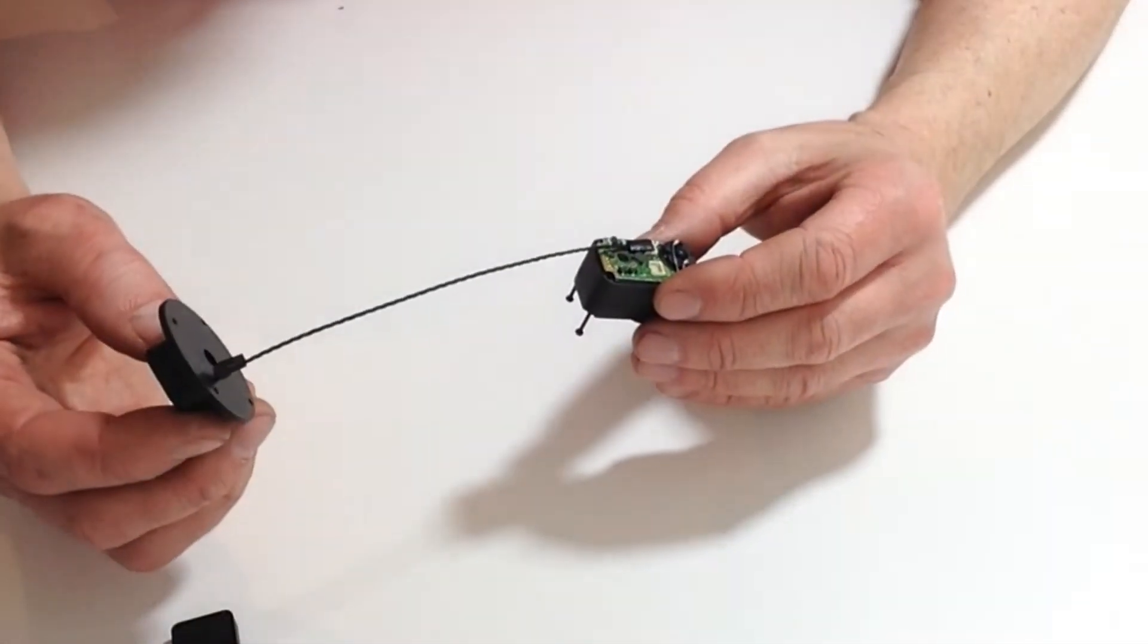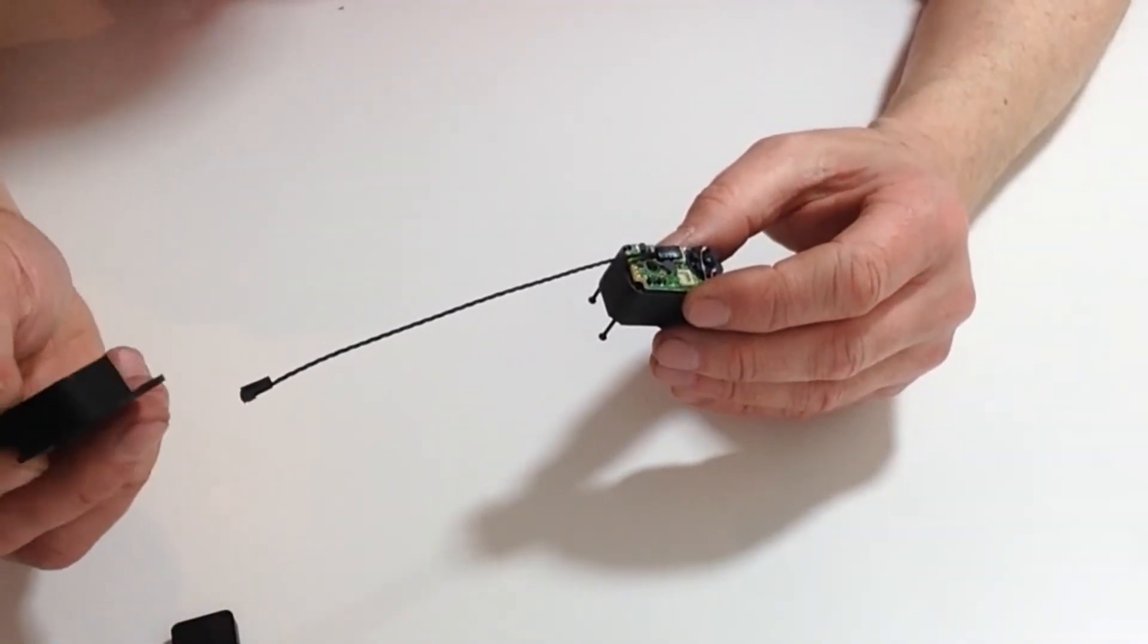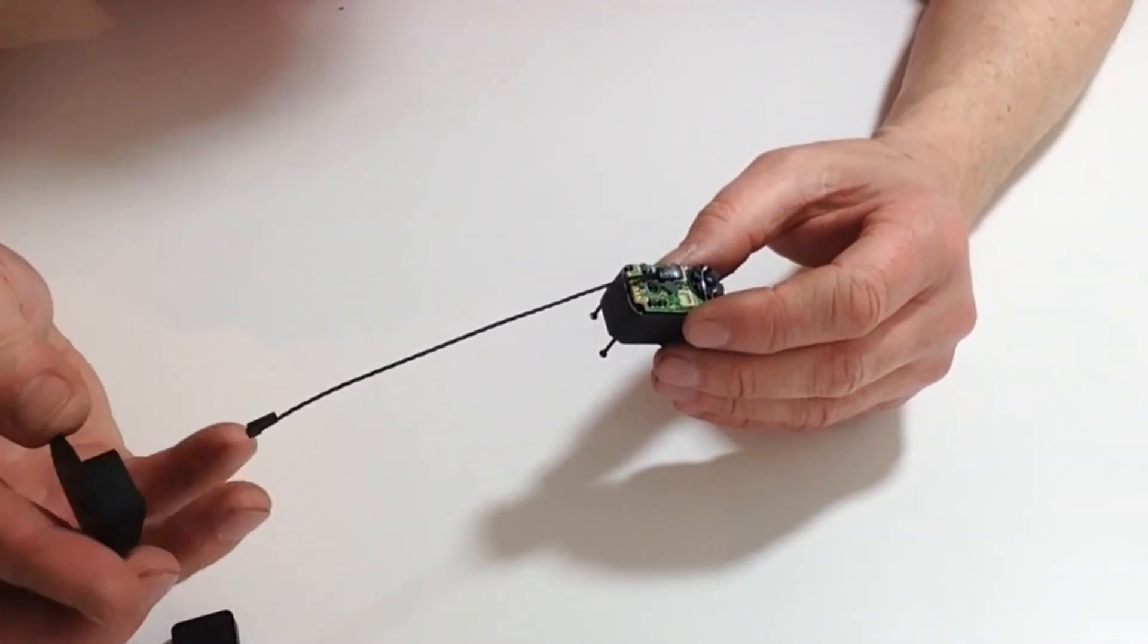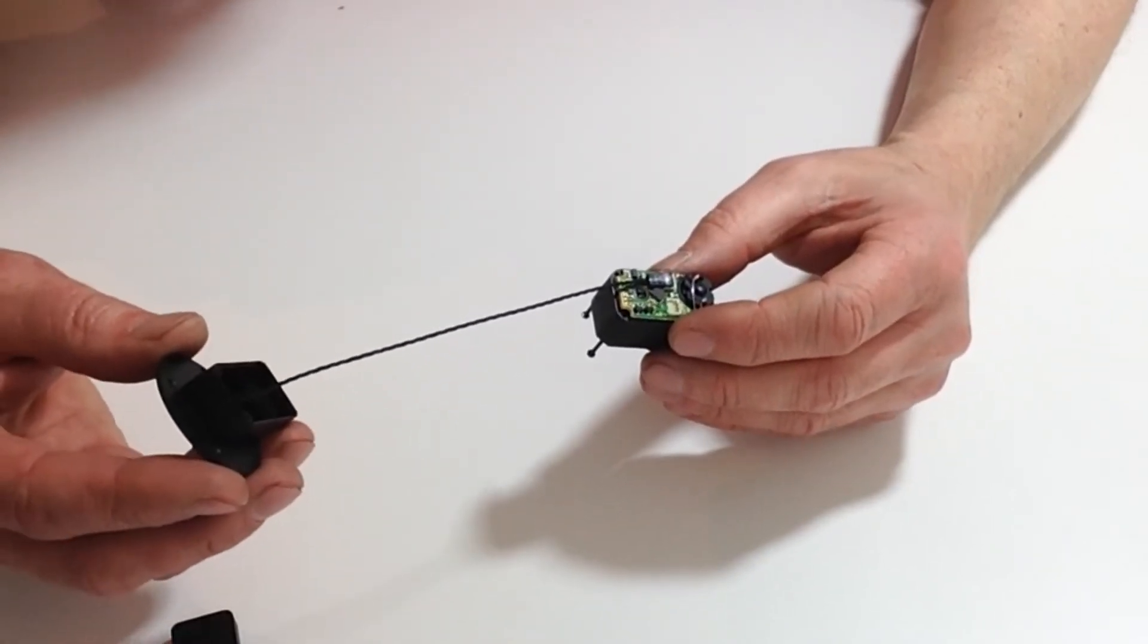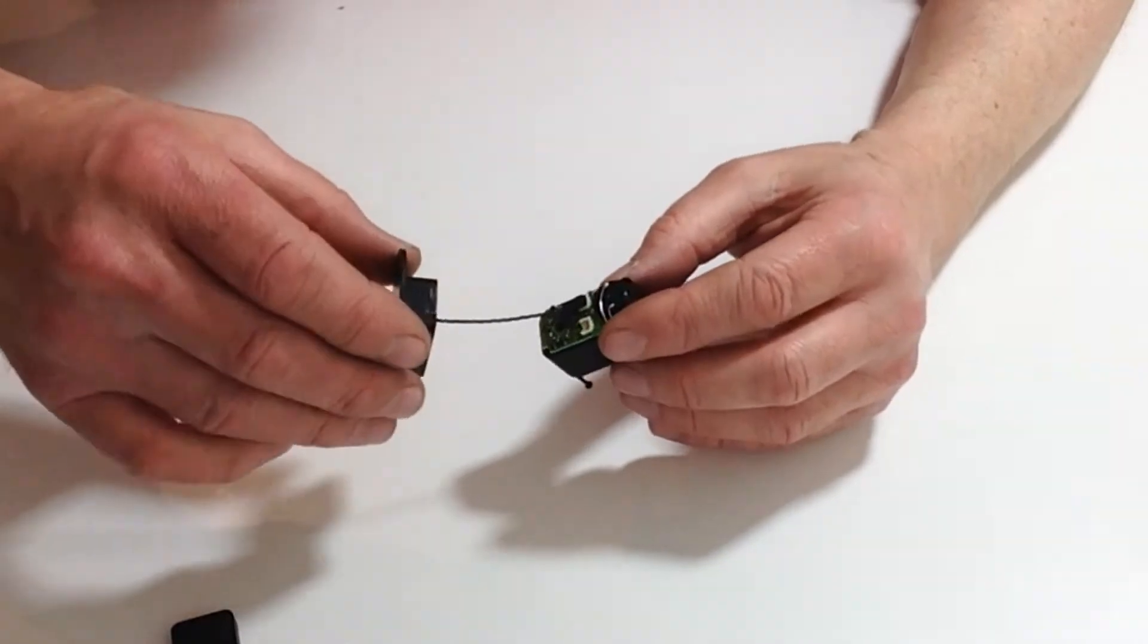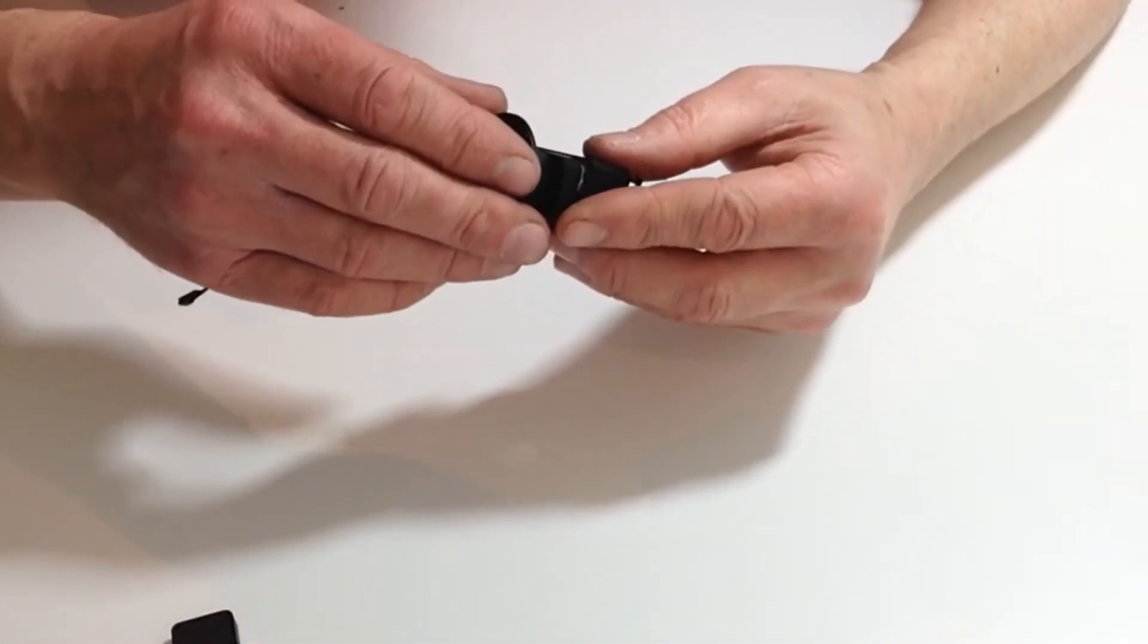Now take the servo mounting plate. Notice how we're going over and under so that the cable goes through the mounting plate.